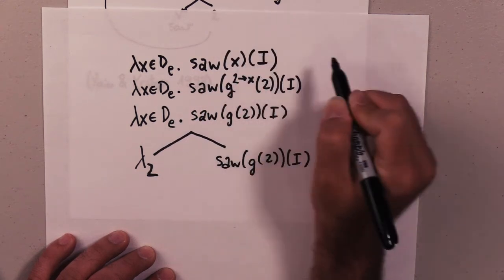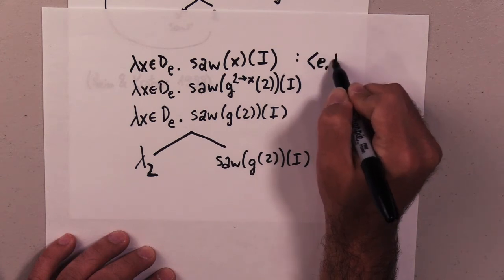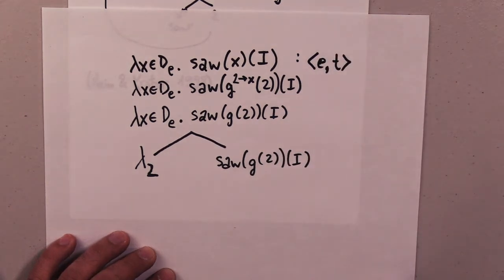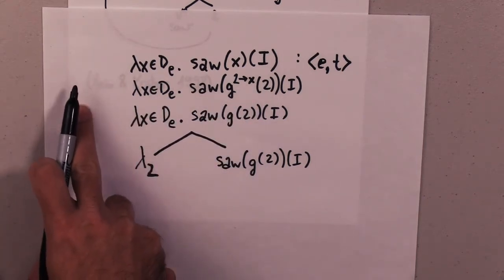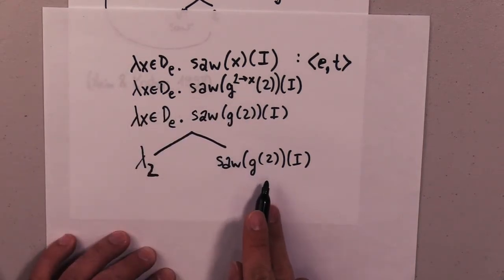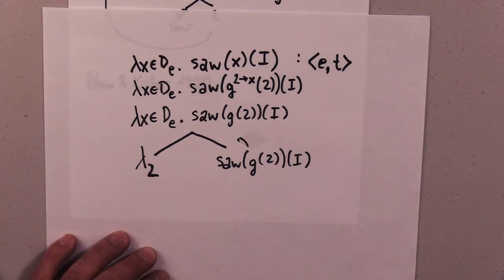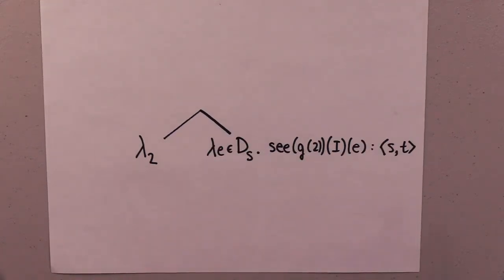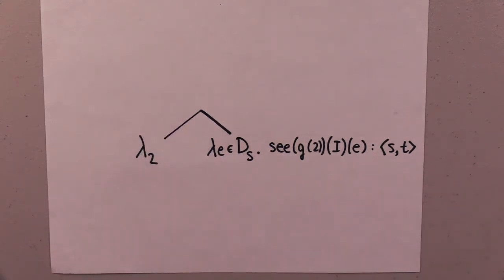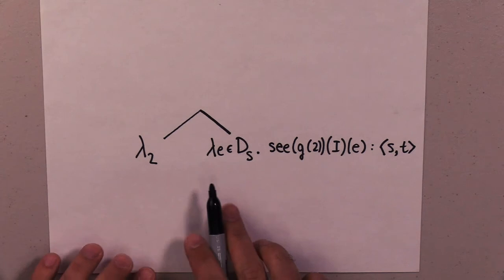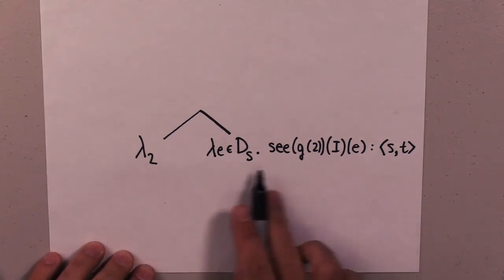And now we have an expression of the right type, and we know that whenever we plug this in to 'everyone,' this is who gets seen. So one thing that people often mess up is abstraction when there's already a lambda expression in the value.